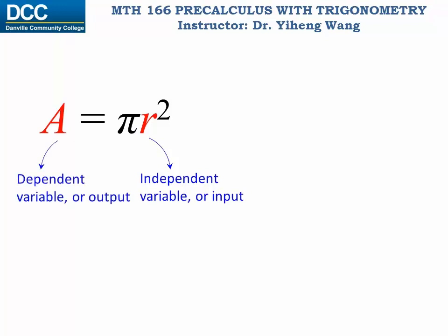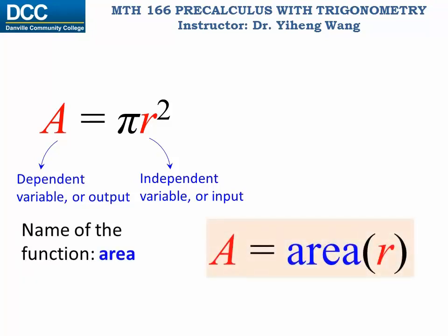We can give this function a name, say area, and now this function can be rewritten this way. This means that A is a function of r, which is inside the parentheses, and the function name is area, and the rule of calculation for this function is A equals pi r squared.